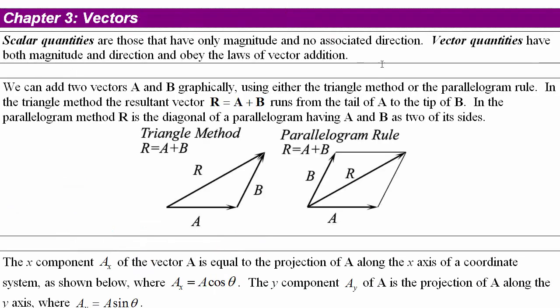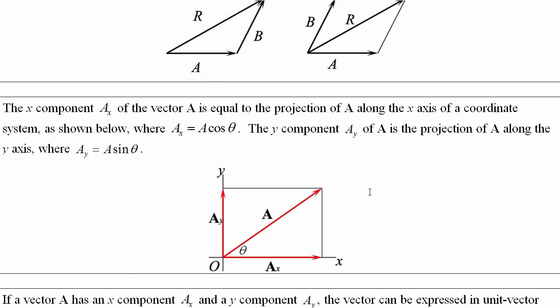Chapter 3, vectors. So scalar quantities have only magnitude and no direction. Vector quantities have both a magnitude and direction, and as such they obey the laws of vector addition. Two ways to think about adding vectors a and b. The triangle method where you put the tail of b at the tip of a. You just sort of translate b over there and then you can say that the tail of a to the tip of b is the resultant. Or the parallelogram rule where you align their tails and then the parallelogram that's made by a and b. The diagonal of that would be the resultant. These are two valid ways to geometrically add vectors.